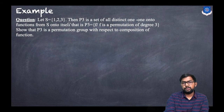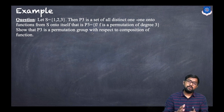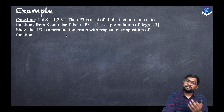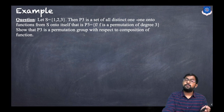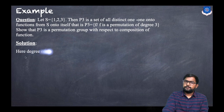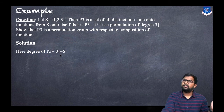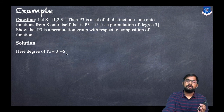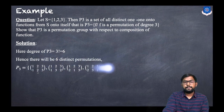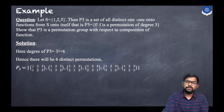Let S = {1, 2, 3} and P3 be the set of all distinct one-to-one onto functions from S to itself — that is, the set of all permutations of degree 3. We need to show that P3 is a permutation group with respect to composition of functions. Since the degree is 3, by our note it will contain 3! = 6 elements, so there will be six distinct permutations.